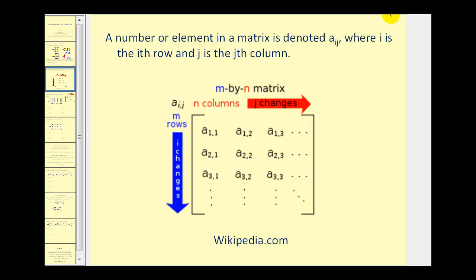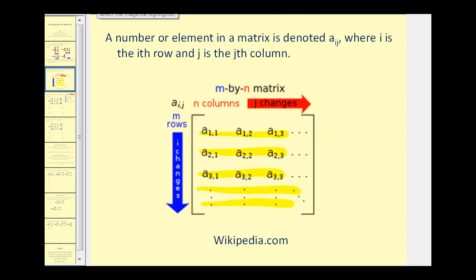So once again, if we're looking at any matrix, if we count down we'll be counting the number of rows, and if we count across we'll be counting the number of columns as we see here.